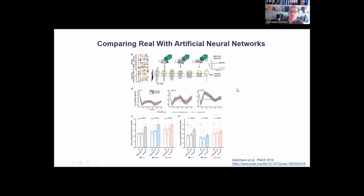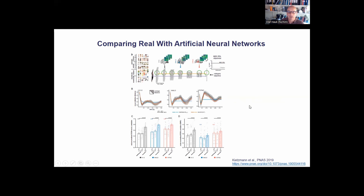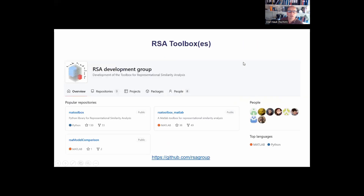This is also illustrated for deep neural networks: you can look at multiple regions, multiple time points, and multiple layers of different deep neural networks, then compare different types of networks and see which one best predicts your MEG data's similarity structure. One result from this study was that deep neural networks with recurrent connections produce representational similarity structures that better resemble those from MEG data than networks without recurrent connections.